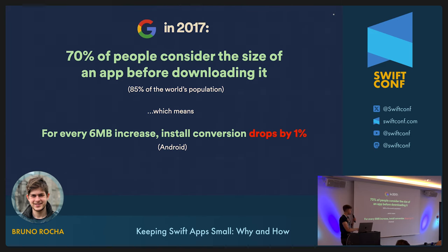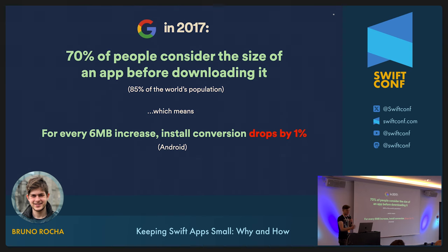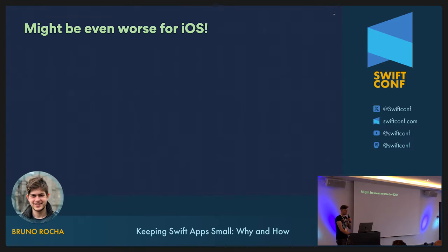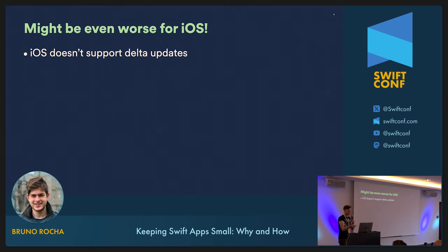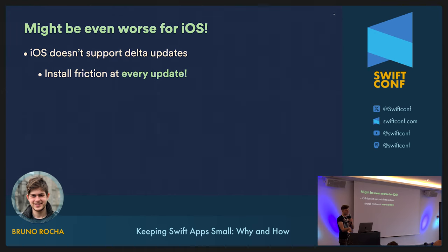Now these are actually Android numbers. The reason I'm showing this instead of iOS numbers is because the iOS equivalent basically doesn't exist — the App Store doesn't allow you to A/B test the binary. Because Apple has never done public research on this, we can't say for sure what the iOS number is. But experience shows it's also true for iOS — and possibly worse, because Android supports delta updates, meaning you only download the difference between builds. On iOS, you have to download the entire binary again every time you update.